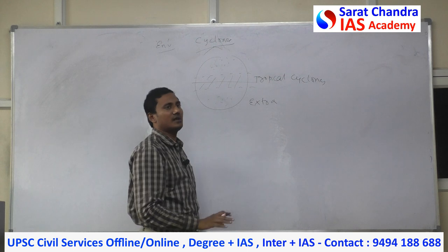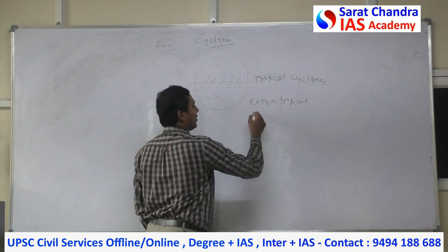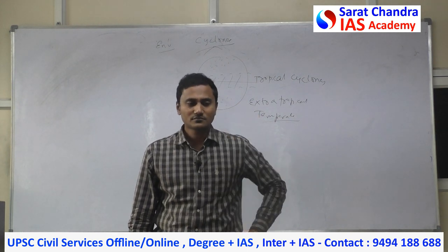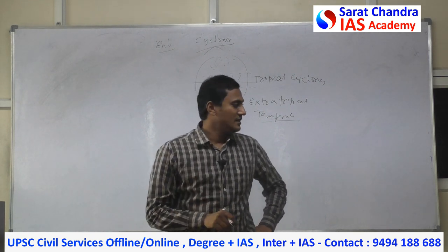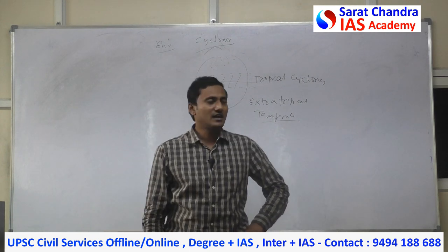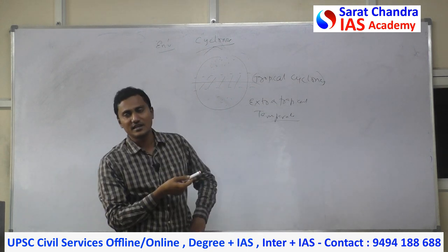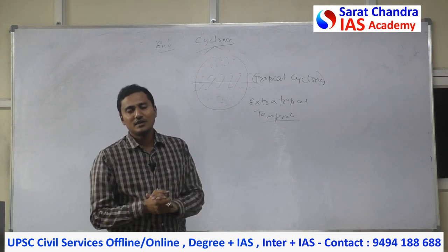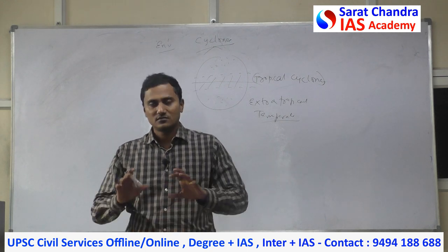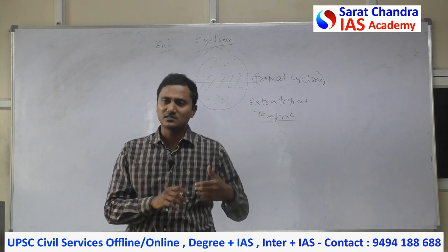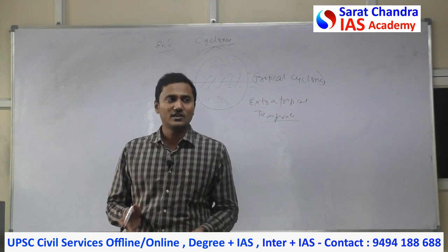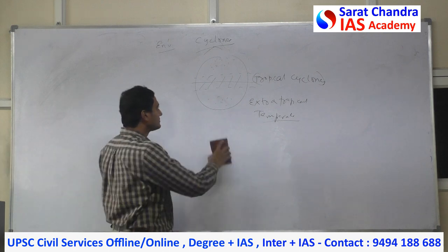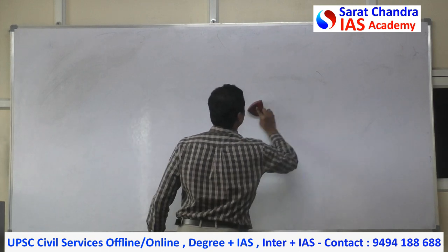Extra-tropical means outside the tropical zone — any other area. These are also called temperate cyclones because they occur mostly in temperate areas; polar occurrence is rare. I have already discussed tropical cyclones, which are very important for India since India gets tropical cyclones. I may revise tropical cyclones towards the end. The exact cause of tropical cyclones is not 100% known — some 80-90% is understood, and different scientists give different reasons, so we have to combine all reasons when writing an answer.